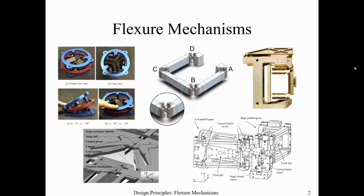It can also be called elastic mechanisms — that was the earlier terminology, then people started saying compliant mechanisms. The name flexures is used because it's related to bending; most deformations are bending deformations, though torsional stiffness is also discussed. There are no conventional revolute joints or bearing surfaces. In conventional design we have revolute joints with physical contact and friction; here motion comes entirely from elastic deformations.